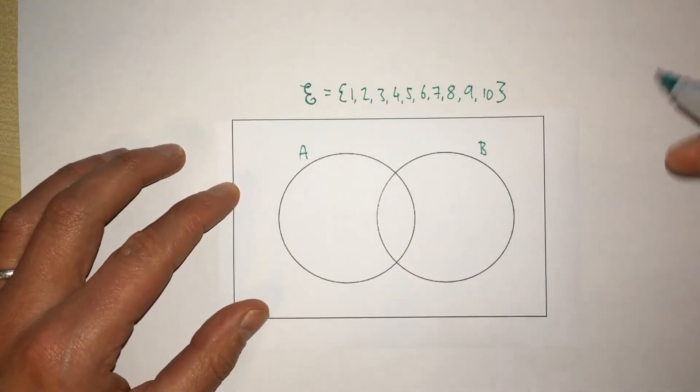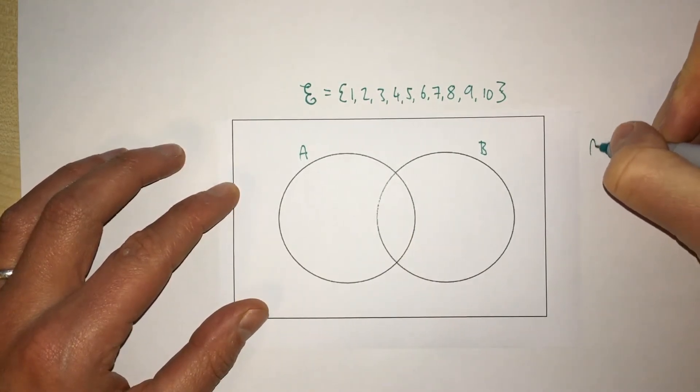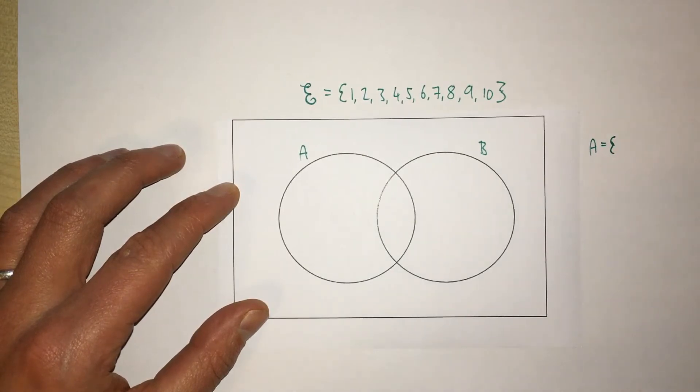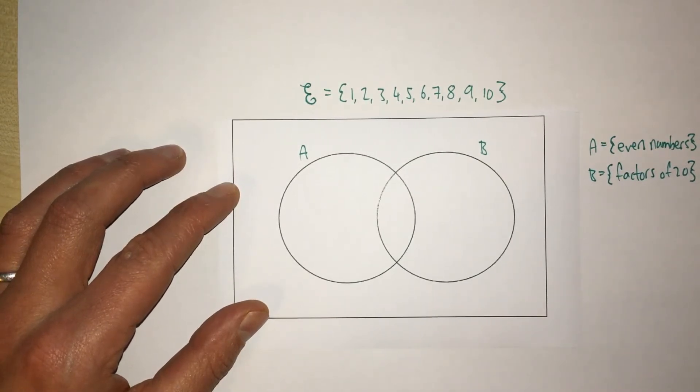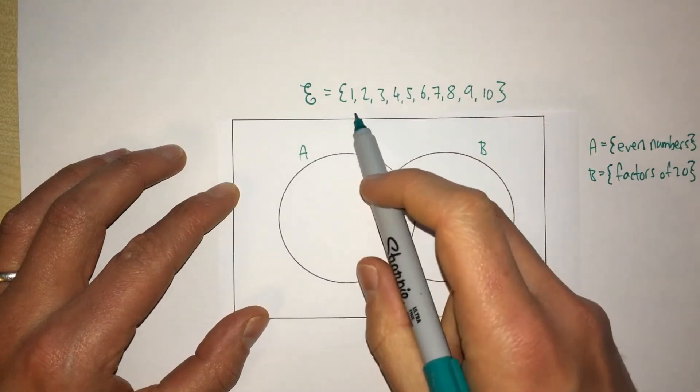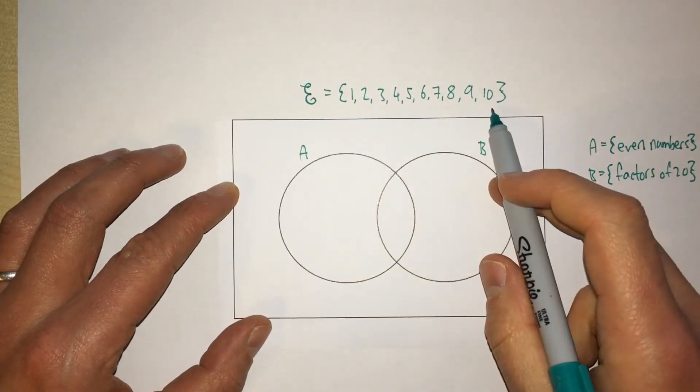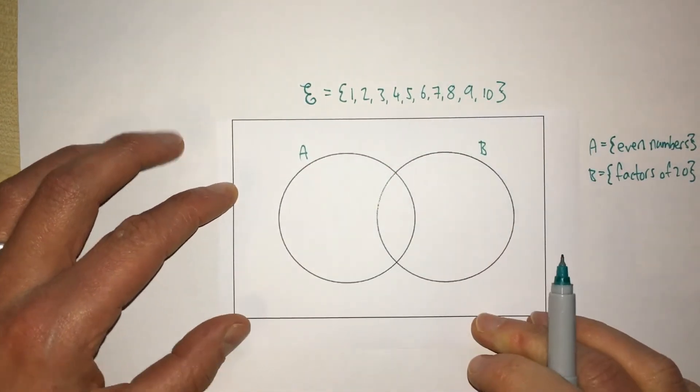Let's say that our set A are even numbers, and set B factors of 20. Now we have this information, we can start placing the elements from our universal set inside our Venn diagram.